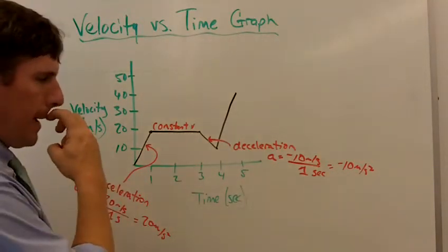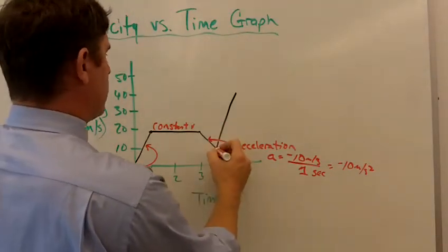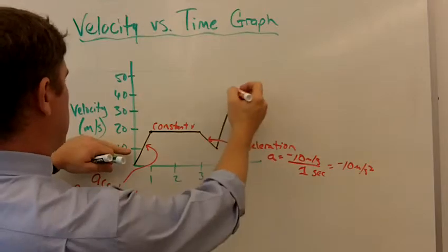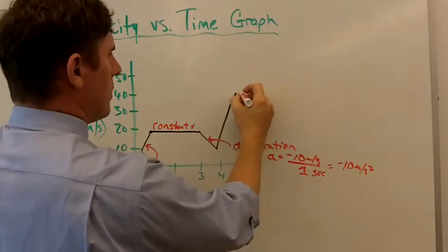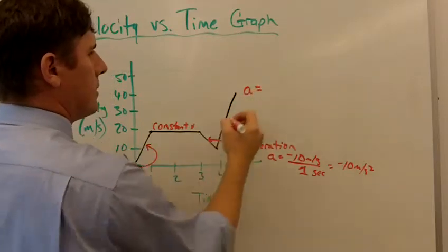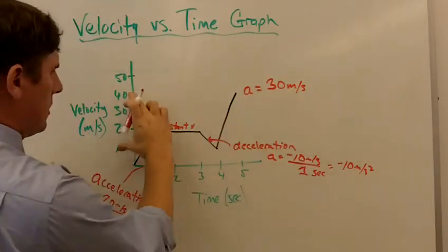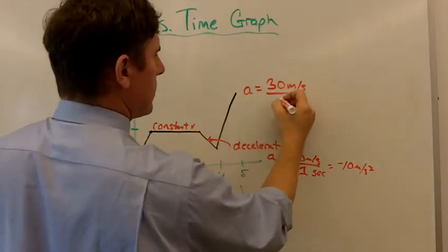How about right here from second four to five? We've got a one second interval and it looks like we jump from 10 all the way up to 40 meters per second. So the increase there is positive, and 30 meters per second change in velocity over the course of one second change in time. So what we end up with is 30 meters per second squared as our acceleration.